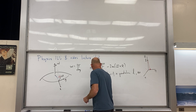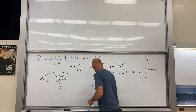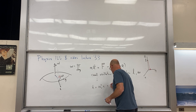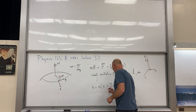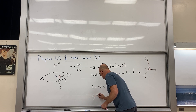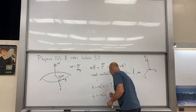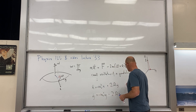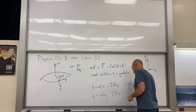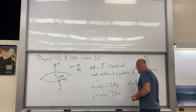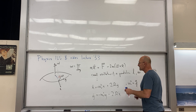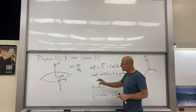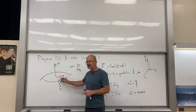Skipping a step from last time, we arrived at: x-double-dot equals minus omega-naught-squared times x, plus 2·Omega·y-dot; and y-double-dot equals minus omega-naught-squared times y, minus 2·Omega·x-dot. Here omega-naught-squared equals g over L, and capital Omega equals the Earth's rotation rate times cosine of alpha — the projection of Omega onto the local Z axis.